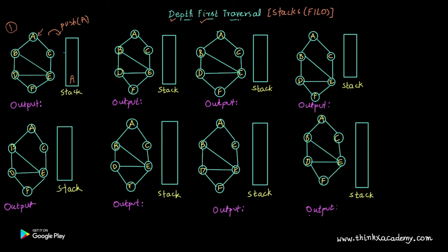In BFS, whenever we visit a node we visit all adjacent nodes. But in depth first traversal we are not going to do that — we pick a particular node and explore its depth, repeating this algorithm to traverse the whole graph. So let's select the next node. Since A is visited, we are going to choose B. We mark B as visited, and whenever we mark any node as visited we push it into the stack. So B is pushed into the stack.